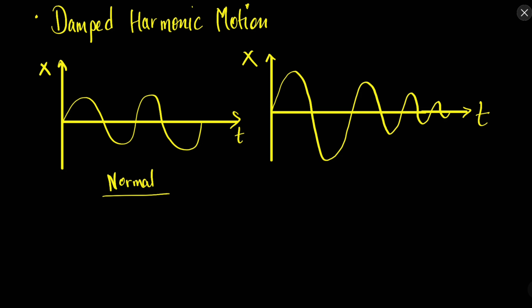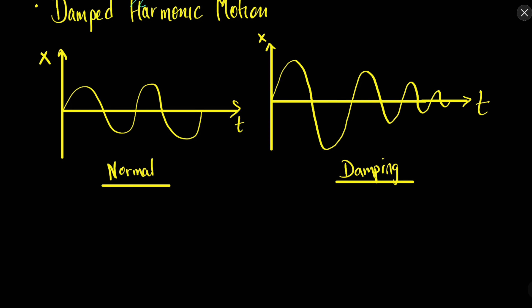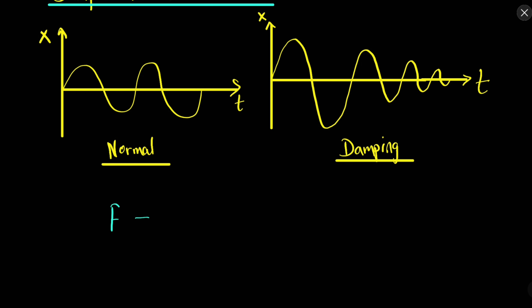This is normal SHM without damping, and this is SHM with damping — the amplitude decreases with time. Damping is the reduction in the amplitude value. There is always some damping because nothing moves forever; it eventually stops due to various resistances. The force of resistance slowing down the oscillator is −BV, where V is the velocity, because more velocity means more opposition.